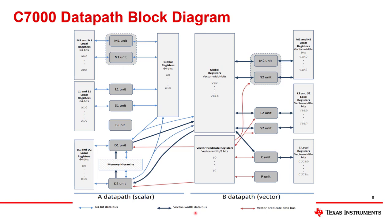We are back to the diagram that opened this video. On the A side, the functional units are all labeled with '1' — M1, N1, and so on. On the B side, the vector width side, they're labeled '2'. These units do similar operations, but on the A side they're scalar and on the B side they're vector. M1 and N1 both do multiplies. L1 and S2 do additions and bitwise operations. The B unit is only on the A side — that's for branches.